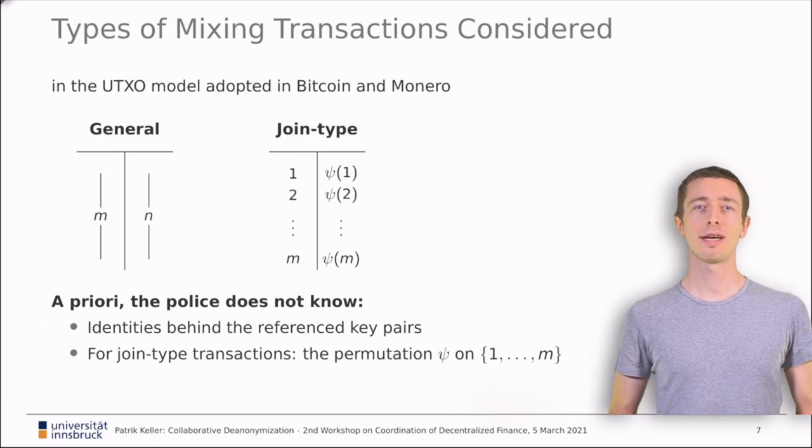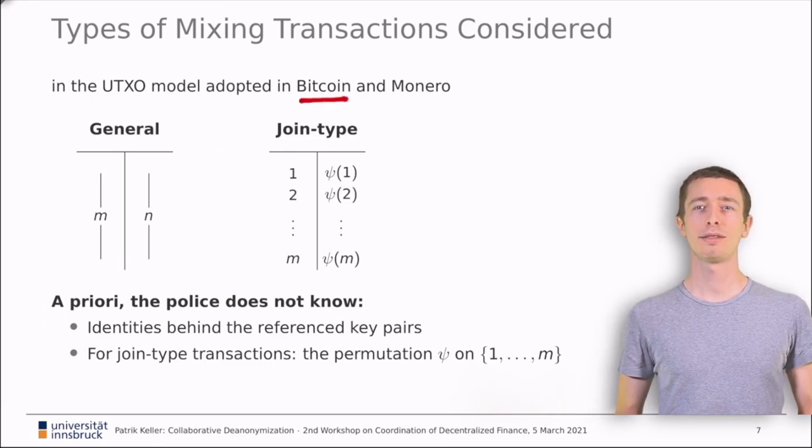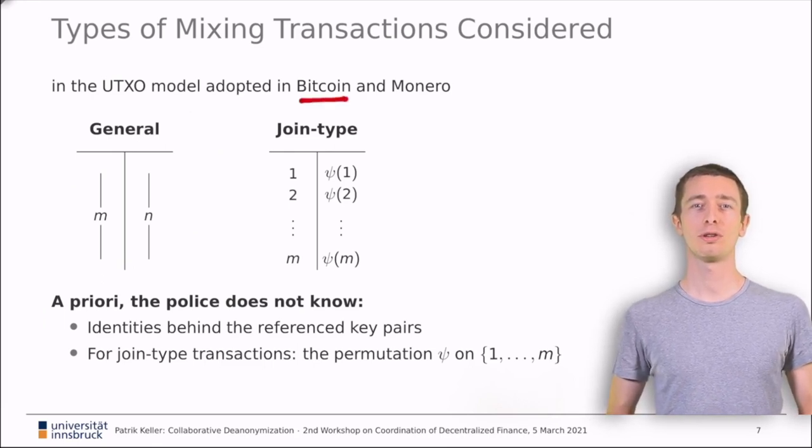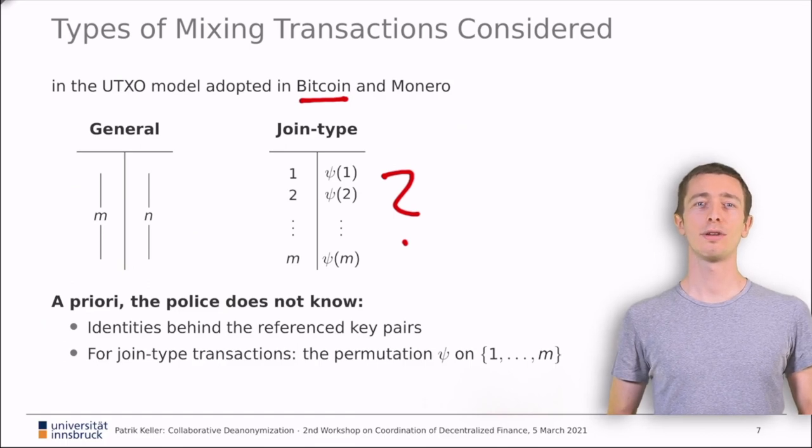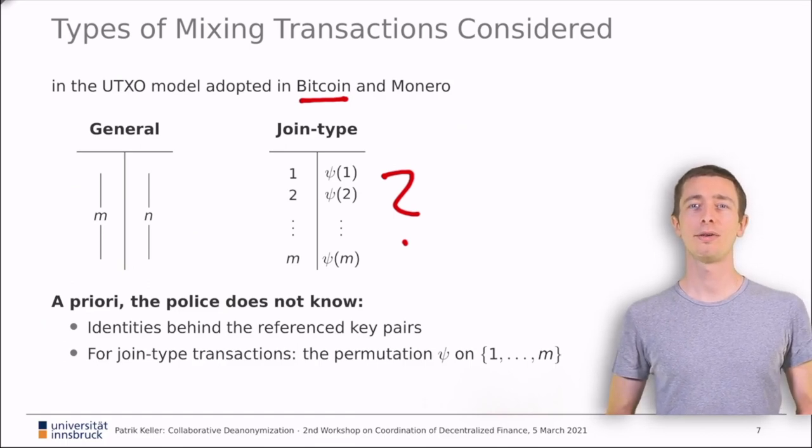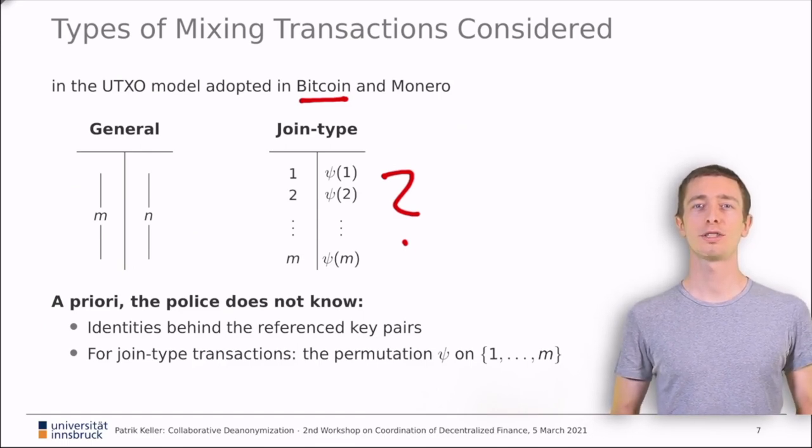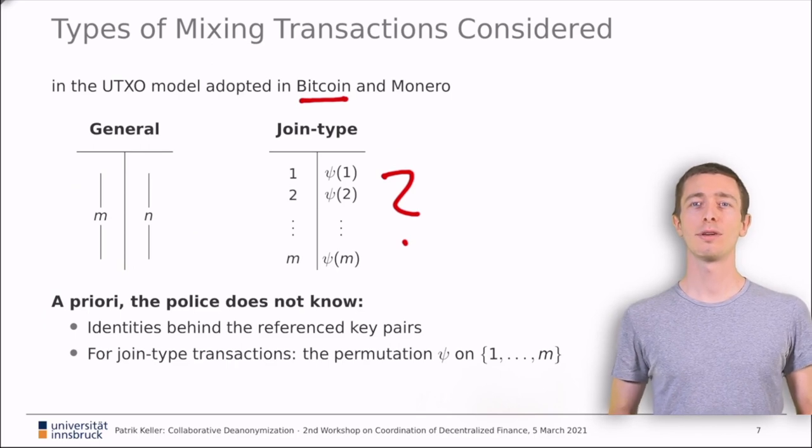First, there are joint type transactions which are implemented for example in the coin-joint protocol on Bitcoin. Here, the idea is that M parties, usually these are M natural persons, provide M inputs for transactions with M outputs. The inputs and the outputs have indistinguishable value. Thus, for an outside observer, it is not clear which input belongs to which output. We say that the law enforcement does not know the output permutation Psi on the inputs 1 to M.